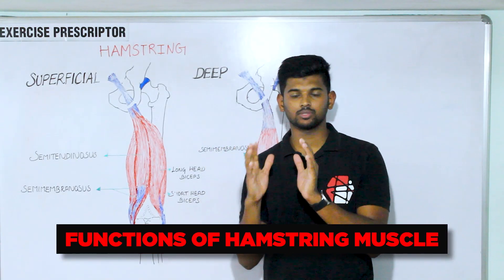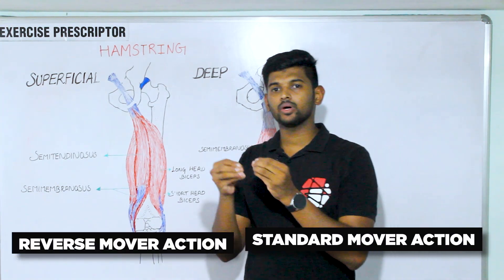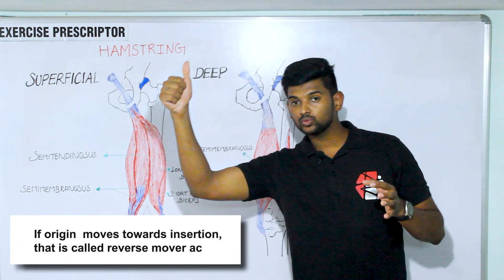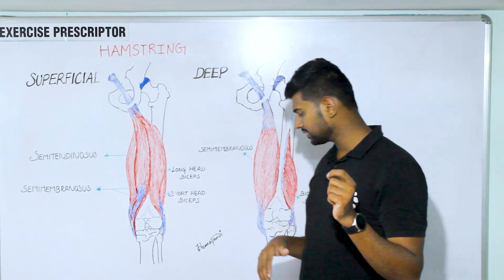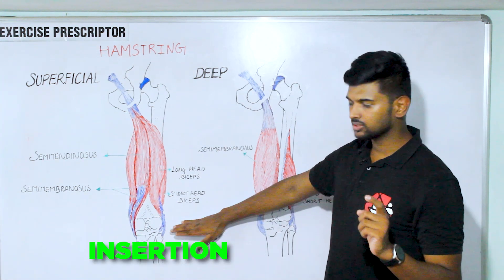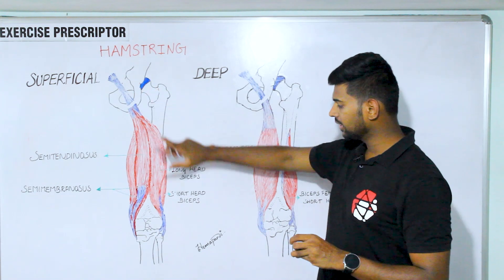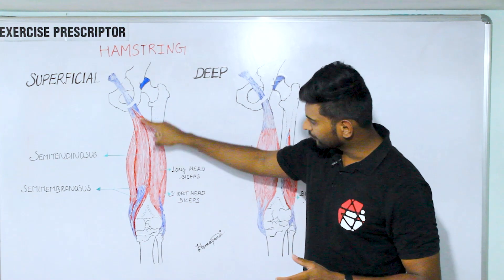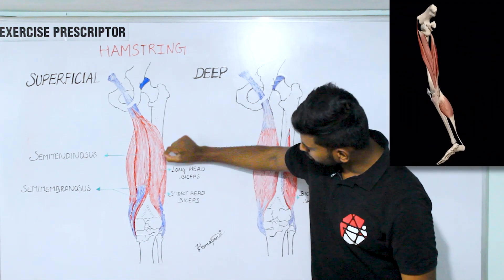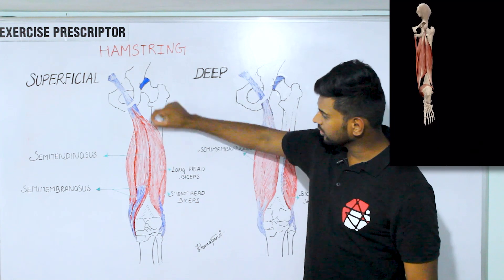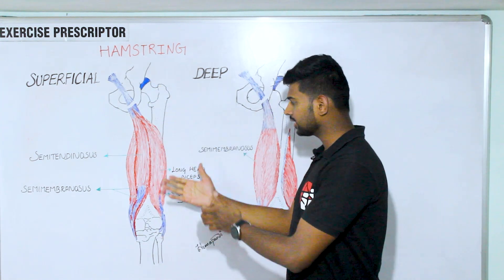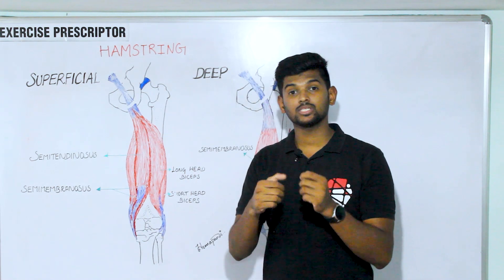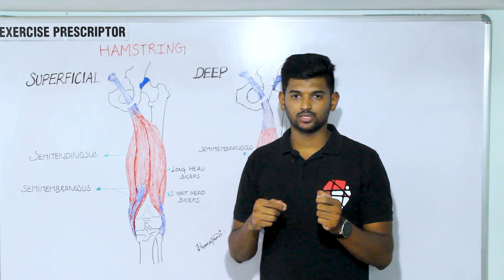Now we'll understand the functions of the hamstring muscle. I always categorize them as standard mover action and reverse mover action. Standard mover action is when the insertion moves towards the origin. For the hamstring, the distal attachment is the insertion and the proximal attachment is the origin. With origin fixed, all hamstring muscle fibers run vertically and cross the knee joint, attaching to the tibia and fibula, creating knee flexion. The proximal fibers crossing the hip create hip extension. So the hamstring helps produce hip extension and knee flexion, but is stronger in knee flexion — making it an accessory or secondary hip extensor.